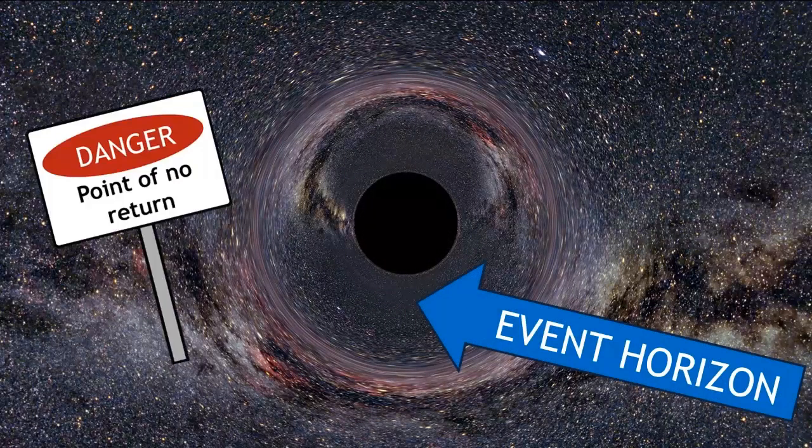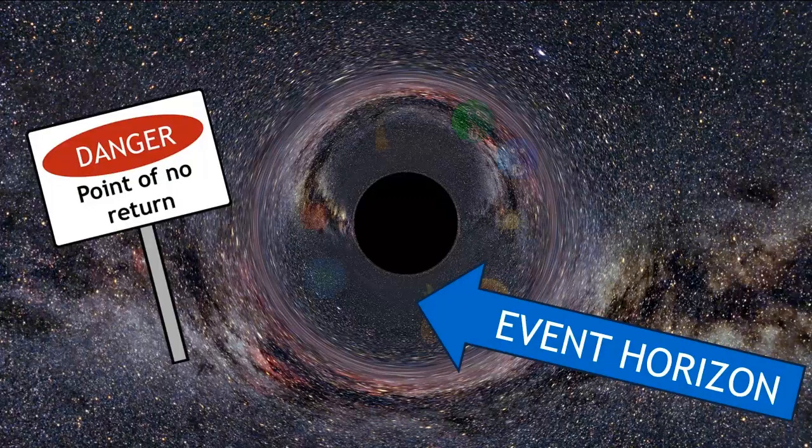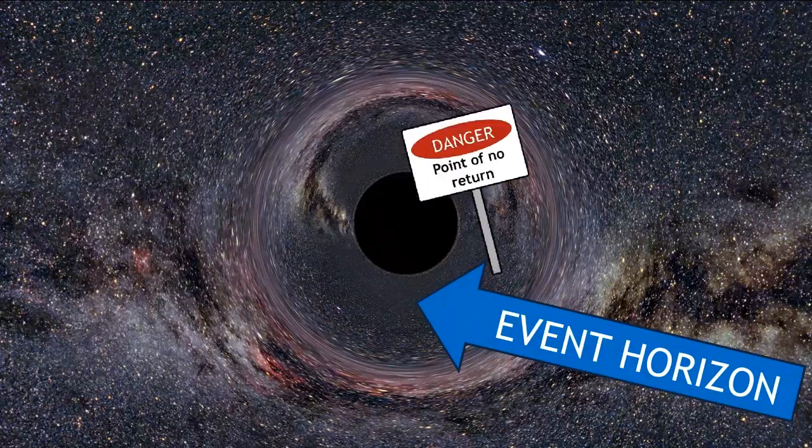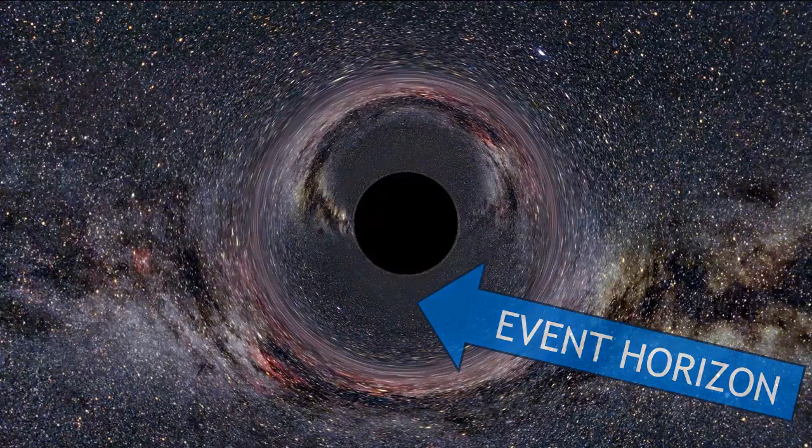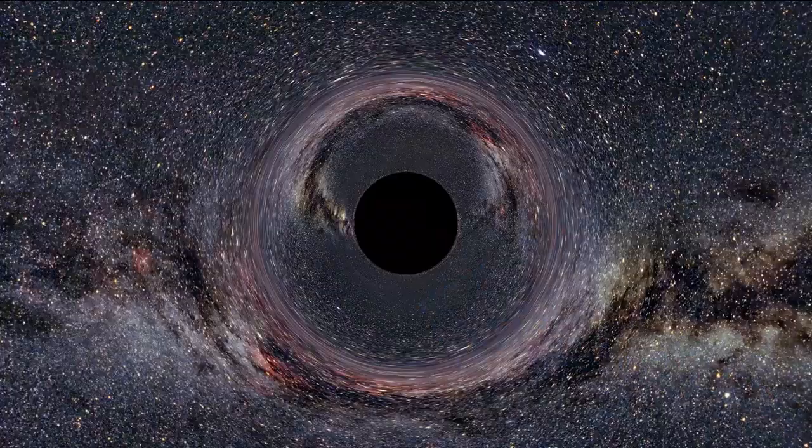This boundary is defined as the point of no return. Anything, even light, that passes through it is trapped and will fall into the core. This is the reason that black holes appear black.